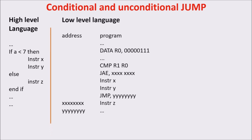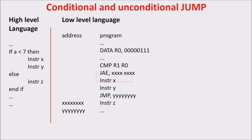Here you can see the translation. On the right we put the addresses, on the left the code. We put the number 7 in R0 with the data instruction, and we imagine having already put the variable A in R1. Then we compare R1 and R0, or A and 7.